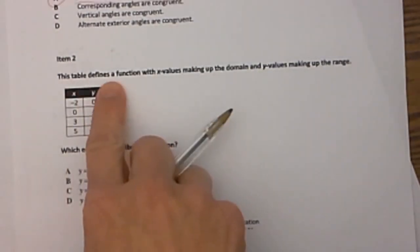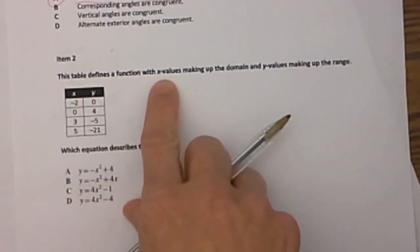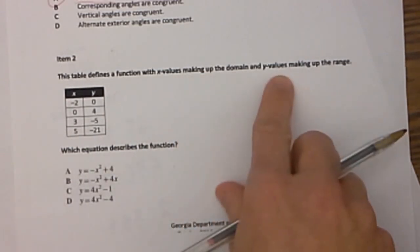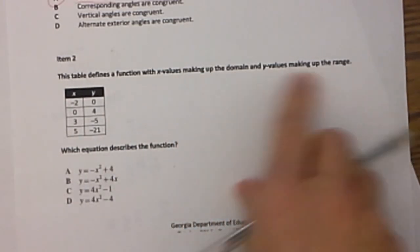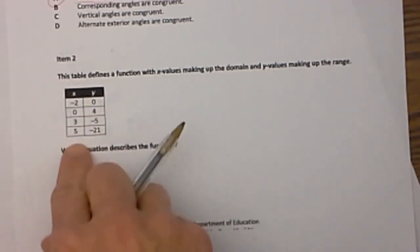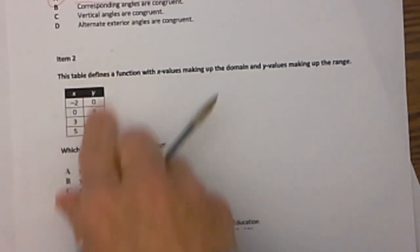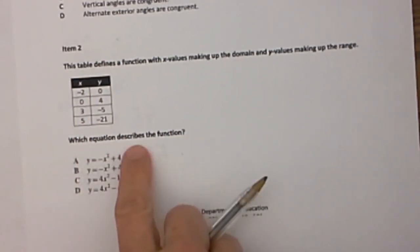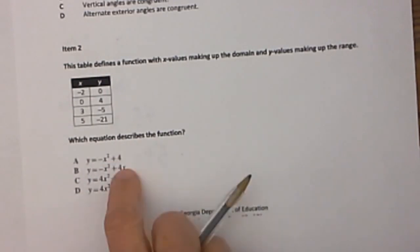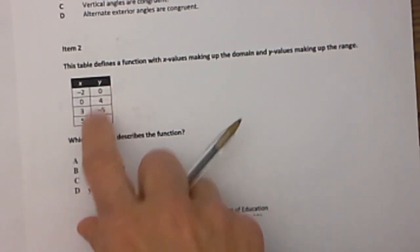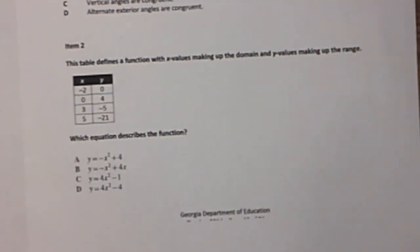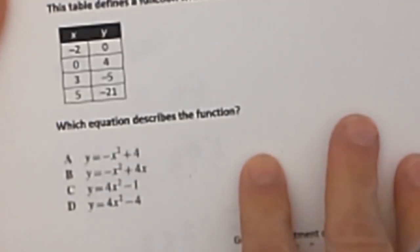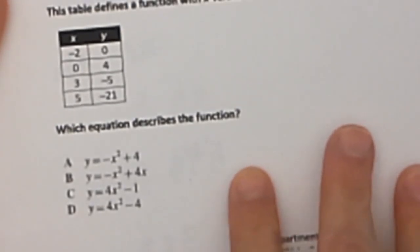The table defines a function with x values making up the domain and y values making up the range. Here is our input and our output and our range. Which equation describes this function? So we are trying to match this table to all the equations. Let's zoom in just a little bit. This is how I would do it. Remember, this is a multiple choice test, so it is one of these four choices.